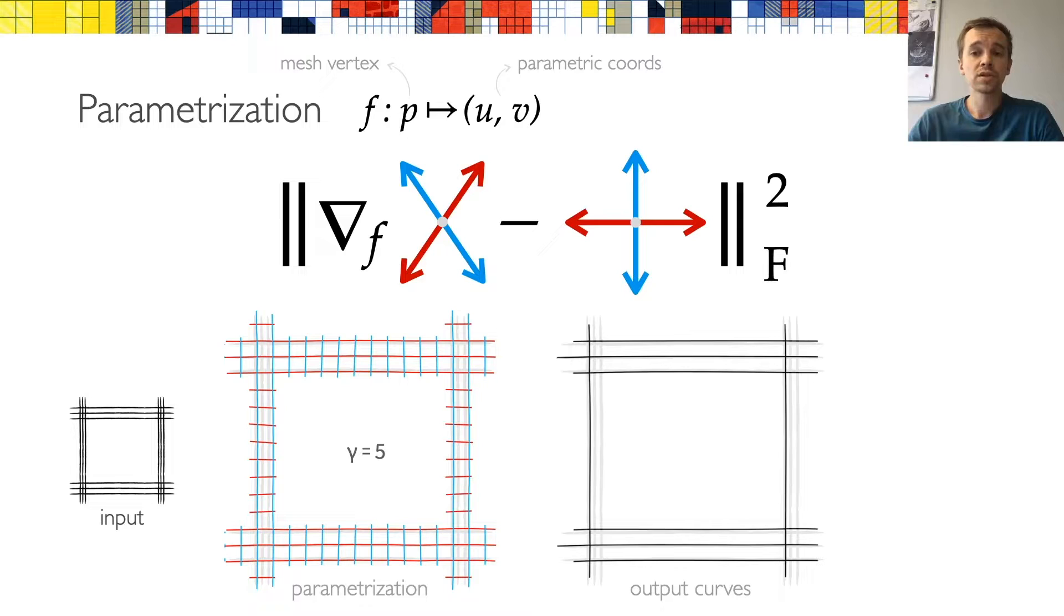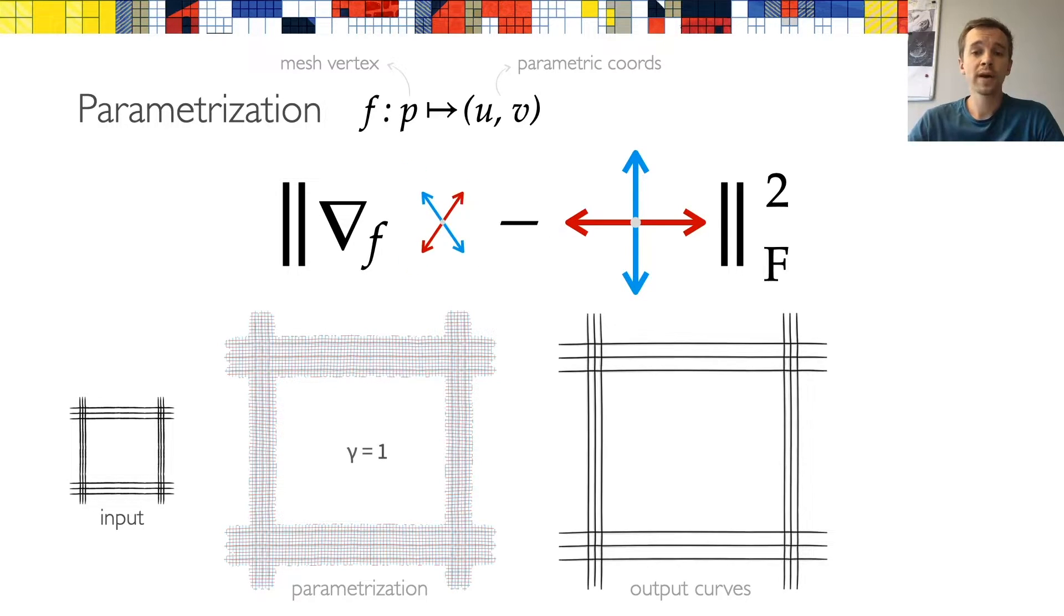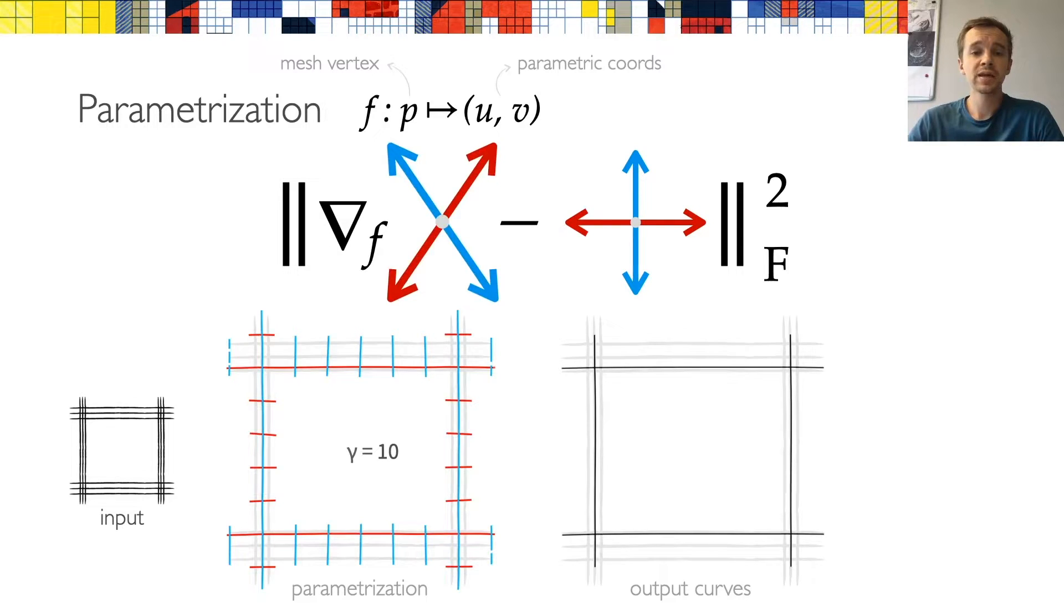We can see how this works on this simple toy example. If the scale is set to 5, the vertical strokes get merged together. Decreasing the scale to 1 leads to less simplification, which in this case means that no strokes are merged and all of them are reconstructed in the output. On the other hand, if we increase the scale to 10, even the horizontal strokes get merged together. In the demonstration that I just showed, the size of the grid was controlled globally using the parameter gamma. We also provide the possibility to control the scale locally using a mask. And I will show examples of these later in the presentation.